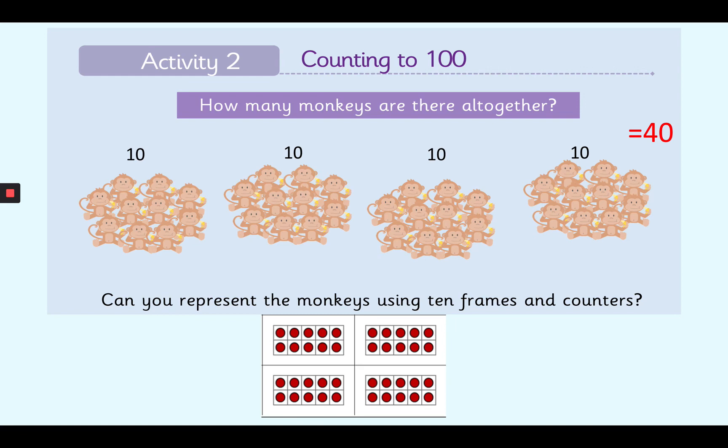So here we have 4 10 frames and they're all filled up with counters. So 10, 20, 30 and 40. There are 40 all together. Well done.